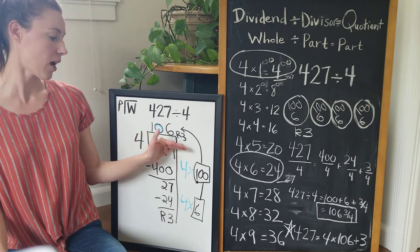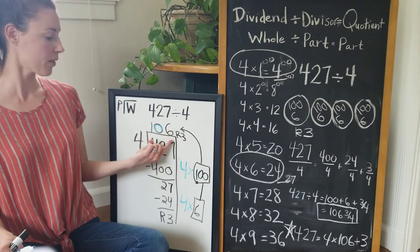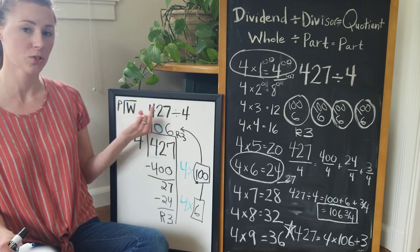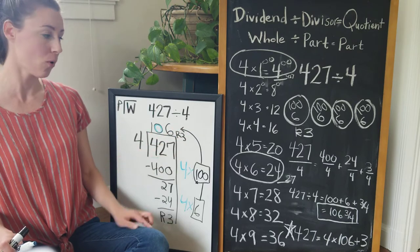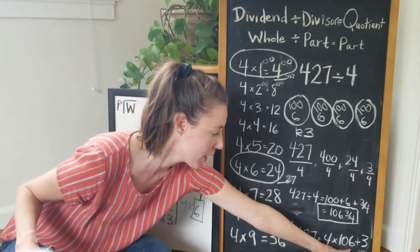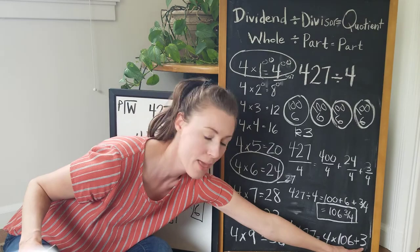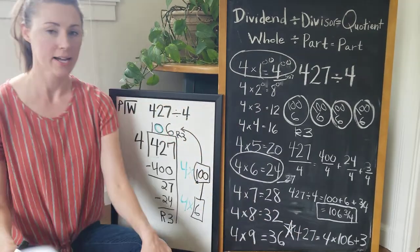But in fourth grade we're going to leave it 106 remainder three, and then we have to check our work. So remember this 106 was in four groups, so four times 106 would be 424. I add the three remaining, I should get my whole, 427. So that's what I wrote down here: four groups of 106, so four times 106 is 424, add that remaining three, I should get the whole 427. And I did, so I did it correctly.